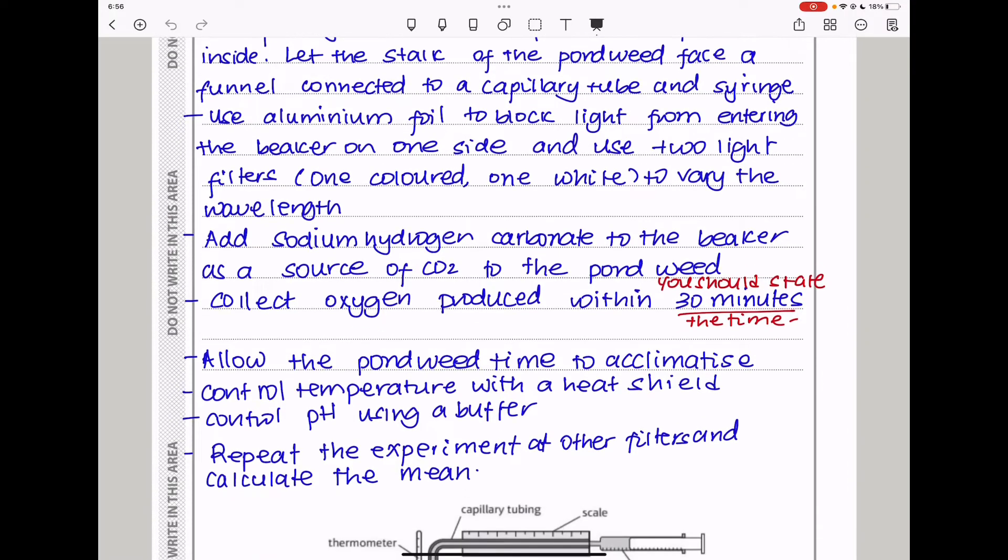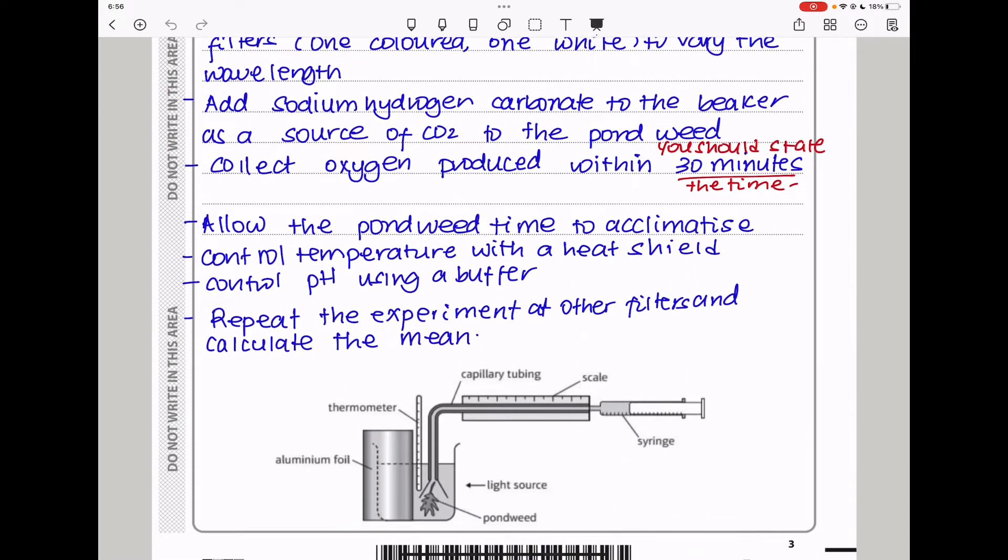Then collect the oxygen produced within a specific period which is about 30 minutes. You need to allow the pondweed time to acclimatize. This allows it to get used to the new conditions before we can measure again. Then control the temperature with a heat shield. You need to control the pH using a buffer. And finally, repeat the experiment at other filters and calculate the mean.